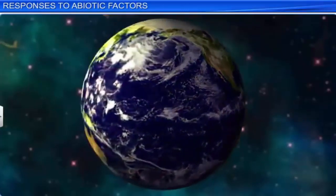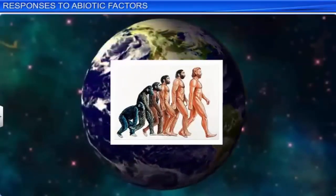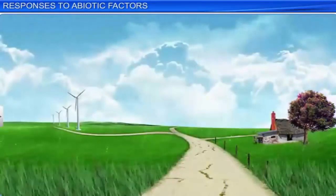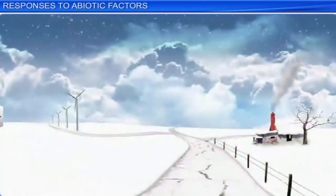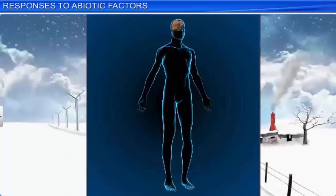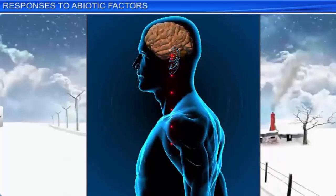Ever since organisms have come into existence on our planet, they have been evolving to survive better and reproduce in their habitats. However, the abiotic conditions of many habitats are never constant and keep changing significantly with time. These changes in abiotic conditions also affect the organisms living in that particular habitat. To sustain life, many species, through a process called homeostasis, try to maintain the constancy of their internal environment. Homeostasis is defined as a physiological process by which an organism regulates its internal environment in response to the fluctuating external environment.